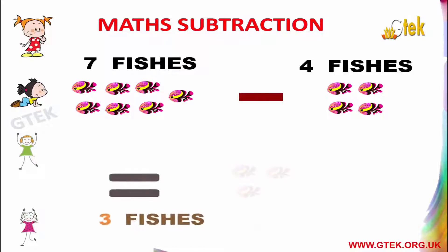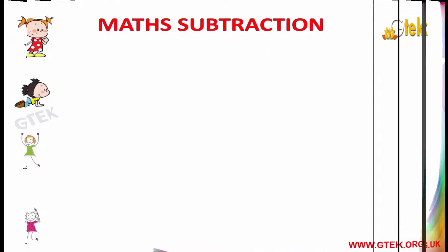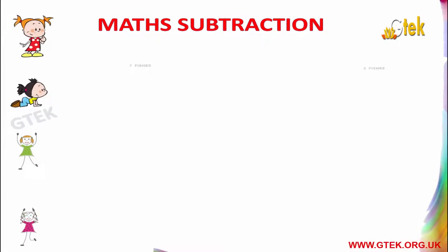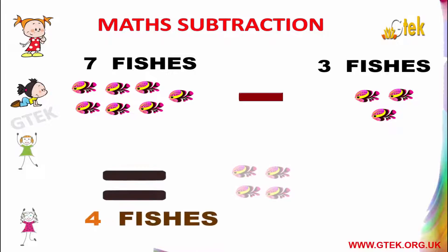7 fishes minus 4 fishes equals to 3 fishes. 7 fishes minus 3 fishes equals to 4 fishes.